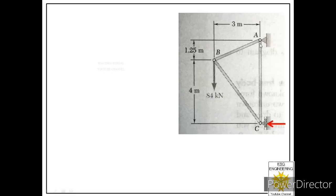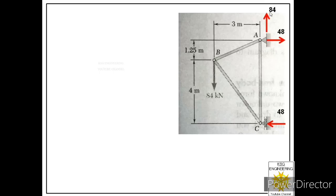First we change the directions of reactions at joint A to their correct directions. RAX now acts towards the right and RAY acts upward. The direction of reaction at joint C remains the same. So we label: RAY = 84 kN (upward), RAX = 48 kN (rightward), RCX = 48 kN (leftward). Since we reversed directions, we don't use negative signs in front of magnitudes.